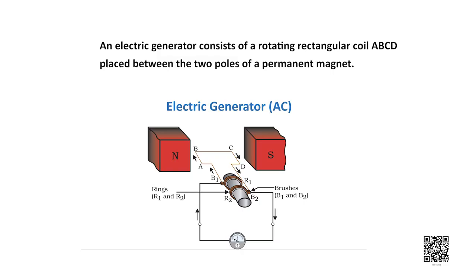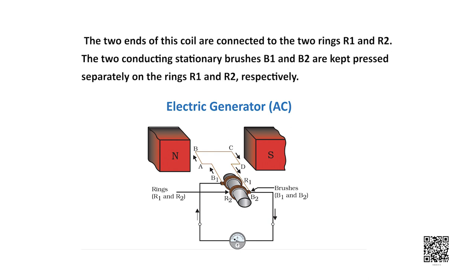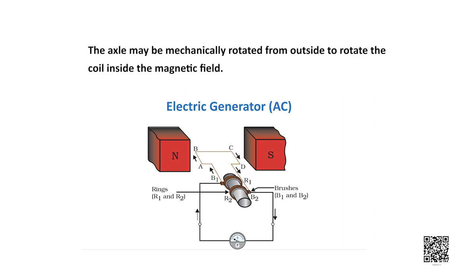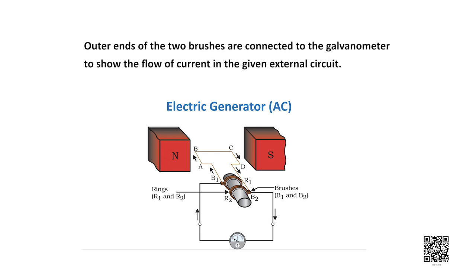In an electric generator, mechanical energy is used to rotate a conductor in a magnetic field and what is generated? Electricity. An electric generator consists of a rectangular coil ABCD placed between two poles of a permanent magnet. The two ends of this coil are connected to two rings R1 and R2. The two conducting stationary brushes B1 and B2 are kept pressed separately on rings R1 and R2 respectively. The axle may be mechanically rotated from the outside to rotate the coil inside the magnetic field. Now the outer ends of the two brushes are connected to the galvanometer which is going to show us the presence of current in the circuit.